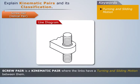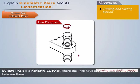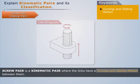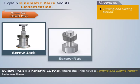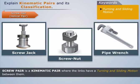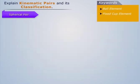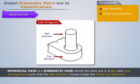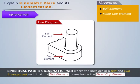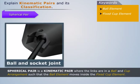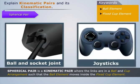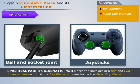A screw pair is a kinematic pair where the links have turning and sliding motion between them. A screw jack, screw nut, and pipe wrench are some examples of screw pairs. A spherical pair is a kinematic pair where the links are in a ball-and-cup arrangement such that the ball element moves inside the fixed cup element. Ball and socket joints, bike rearview mirrors, and joysticks are some examples of spherical pairs.